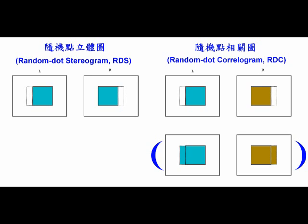If the squares of two half stereograms have different random dot patterns, it's no more stereograms. It becomes a random dot choreogram. The backgrounds of two images are correlated, while the squares are uncorrelated.